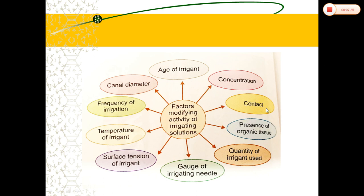The lower the surface tension of an irrigant, the higher its wettability, and hence better penetration into narrow areas for effective debridement. As temperature increases, efficacy increases — that is why hypochlorite is preheated for more effective use. Frequency of irrigation is also important; copious irrigation causes better debridement, and each time a fresh, potent irrigant acts to remove debris and kill microorganisms.